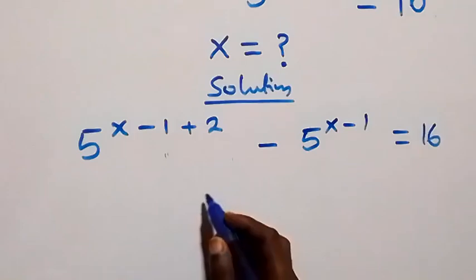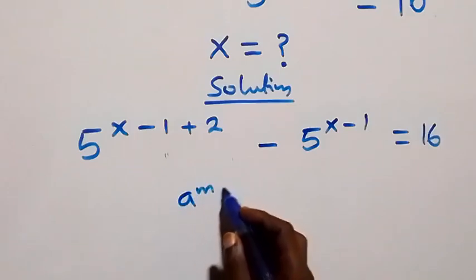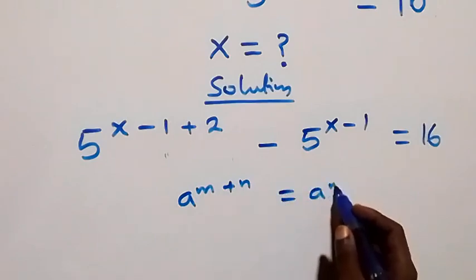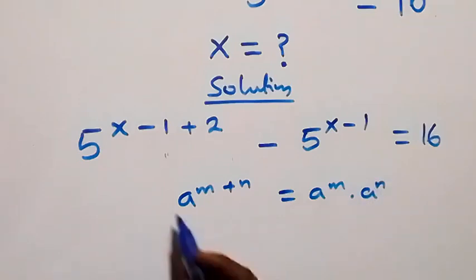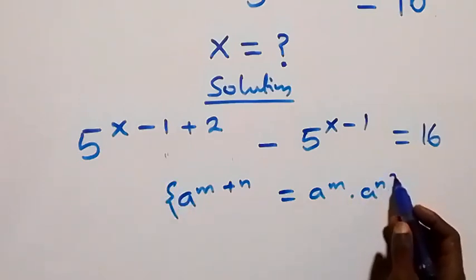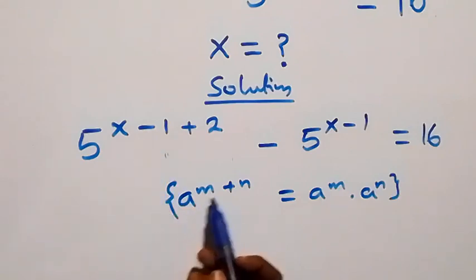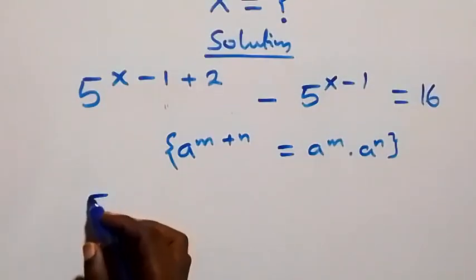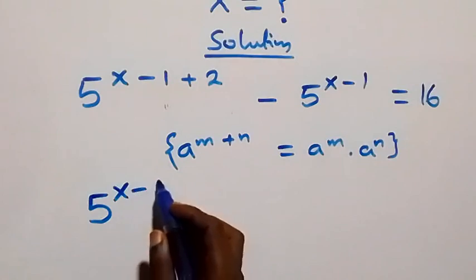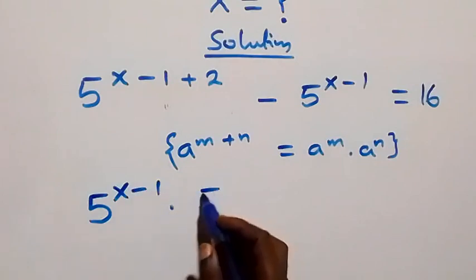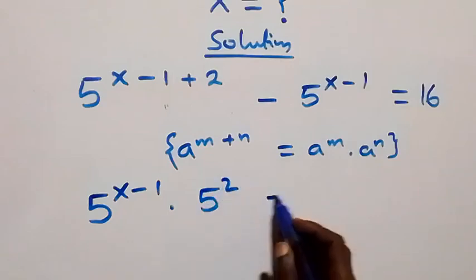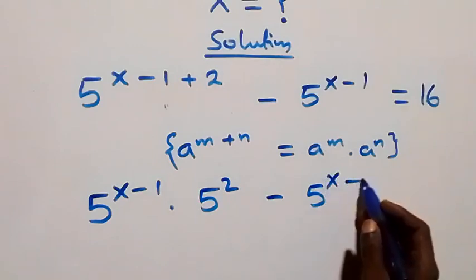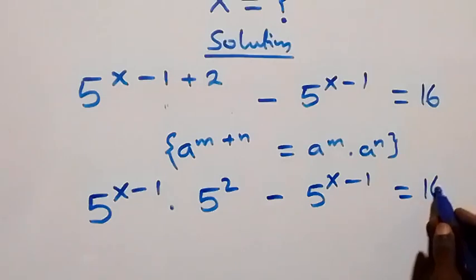Applying the law of indices: a raised to power m plus n equals a raised to power m times a raised to power n. We take x minus 1 as m and 2 as n. Then we have 5 raised to power x minus 1, times 5 squared, minus 5 raised to power x minus 1, equals 16.